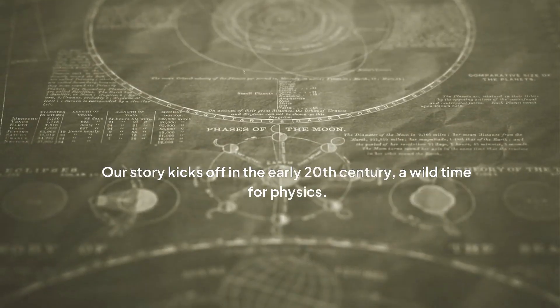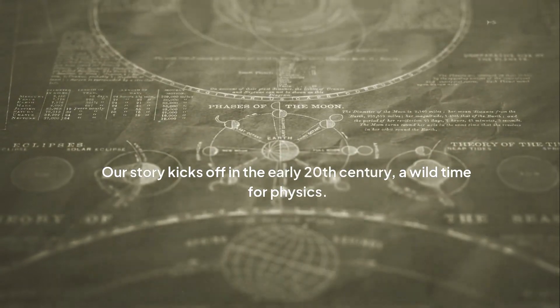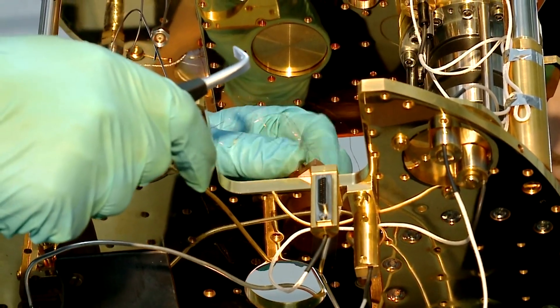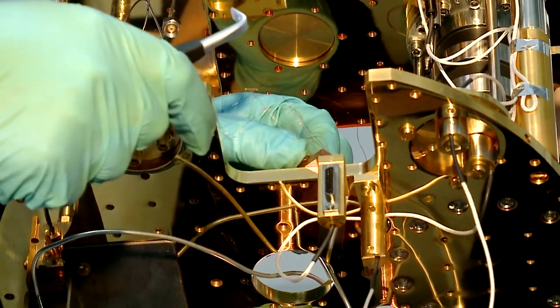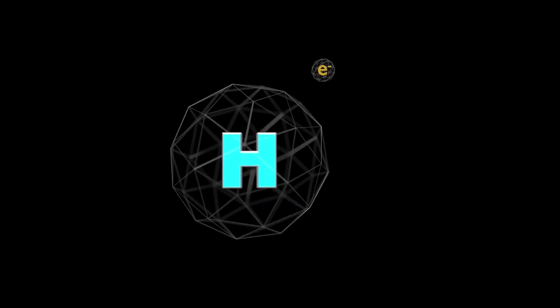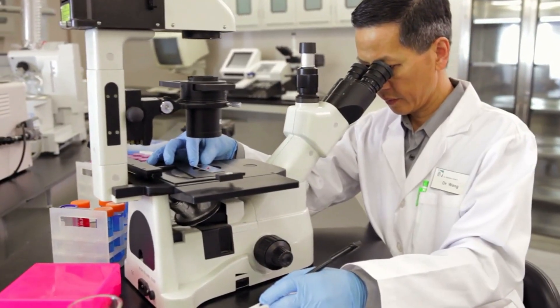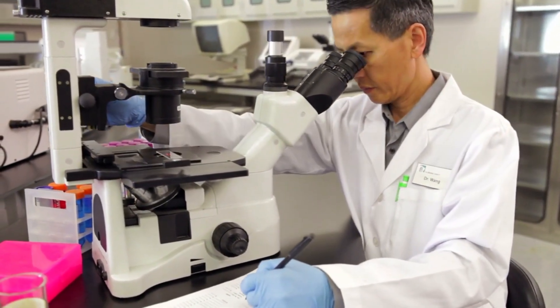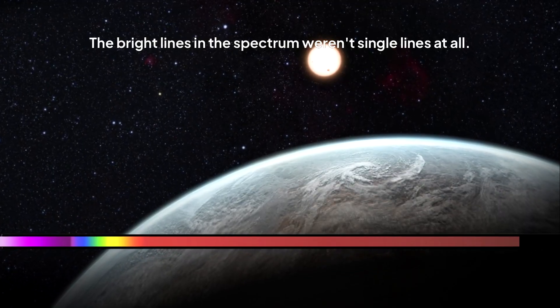Our story kicks off in the early 20th century, a wild time for physics. Scientists were just getting their heads around the new, bizarre quantum world, with the atom as their main obsession. Niels Bohr's simple model of the hydrogen atom was a smash hit. It correctly predicted that when you heat up hydrogen, its electrons leap between energy levels and spit out light at specific frequencies, creating a unique barcode of light, a spectrum. But when scientists like Albert Michelson looked closer with better tools, they saw something the model couldn't explain.